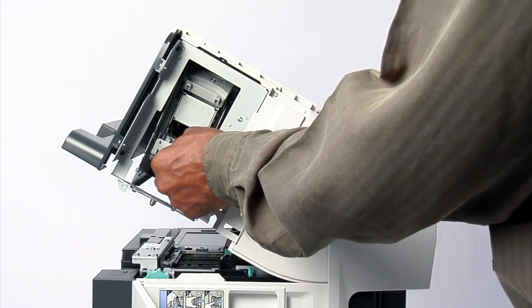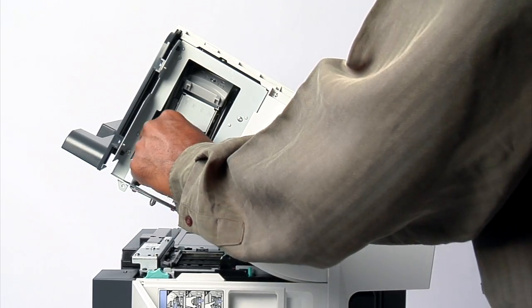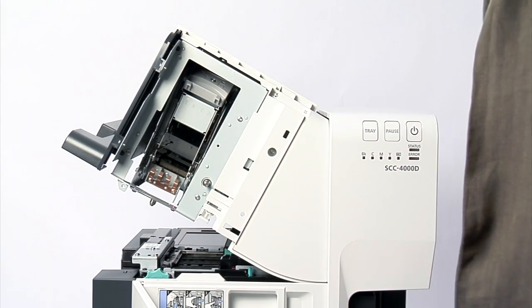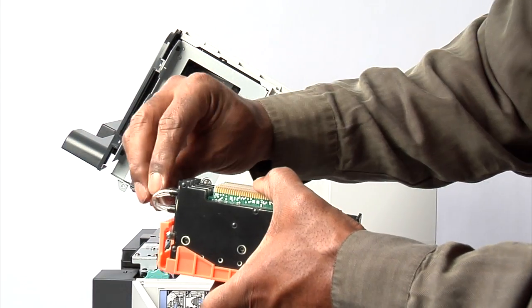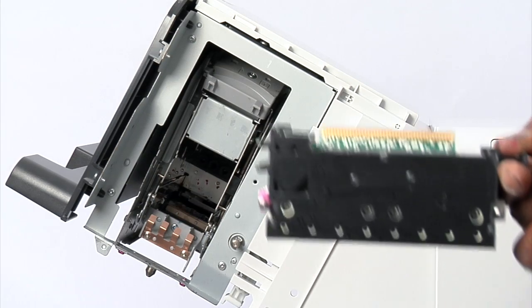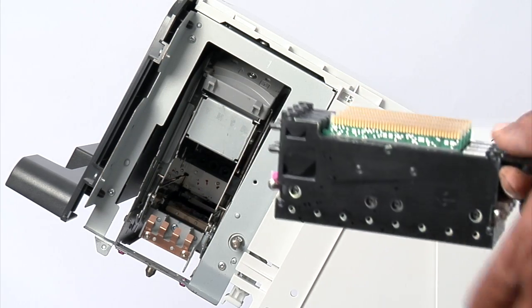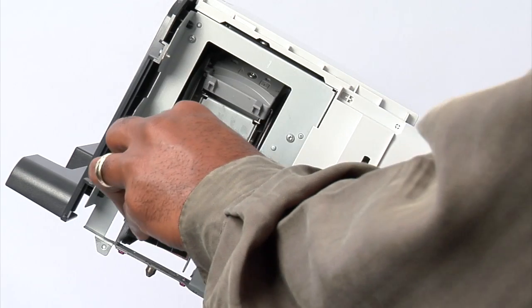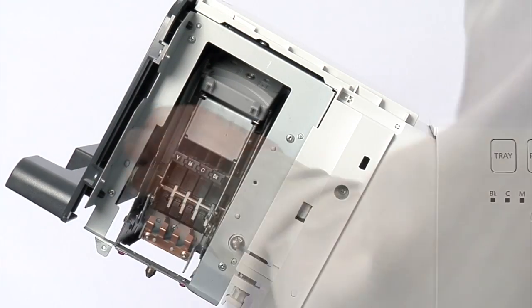Lower the lower printhead release lever. Remove the blade cleaner. Insert the printhead into the print module. Make sure it fits securely in the print module.